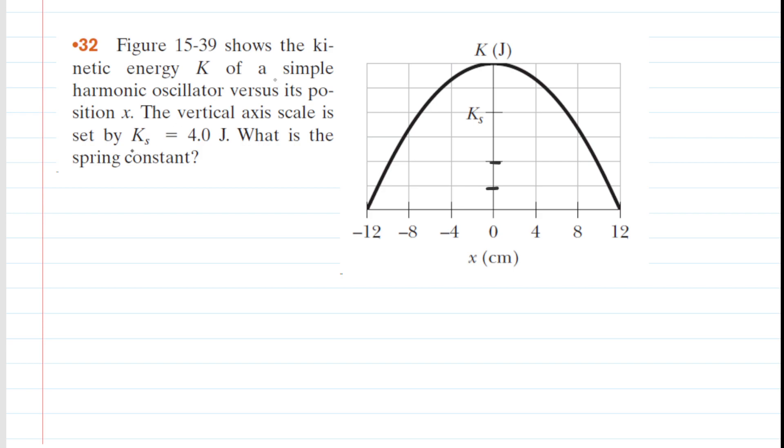The question notes that the vertical axis scale is set by k_s equals 4 joules. So if we look at this tick mark right here on the vertical axis, we know that's going to equal 4 joules. But that tick mark is 1, 2, 3, 4 marks up the vertical axis. So if we take 4 joules divided by 4, then each tick mark is 1 joule.